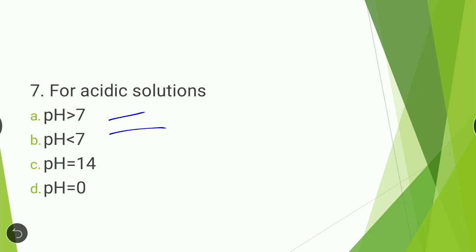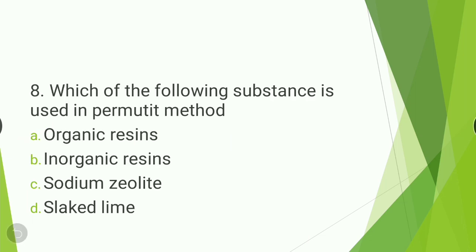Next question: for acidic solutions — pH greater than 7, pH less than 7, pH equal to 14, or pH equal to 0? The answer is pH less than 7. For acidic solutions, pH is always less than 7.